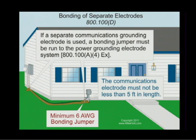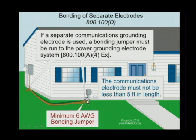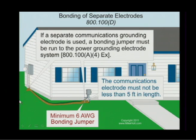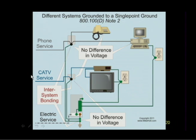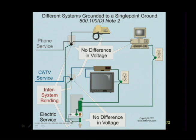Section 800.100.D says that when you drive a ground rod for a communication system under Article 800, you have to bond them together with a 6 AWG wire. When your grounding conductor run is more than 20 feet, you have no choice — you drive a ground rod. The length of the ground rod is no less than five feet. Then bond them together with 6 AWG wire. Best practice is to get the entry point as close as possible to the AC service to limit the length of the bonding conductor to the inter-system bonding terminal. The goal in 800.100.D is to bring all systems to the inter-system bonding terminal to reduce the difference of potential between systems, as covered back in 250.94.